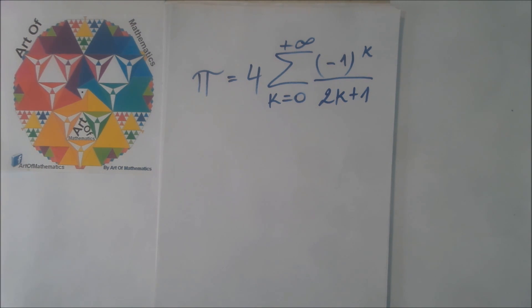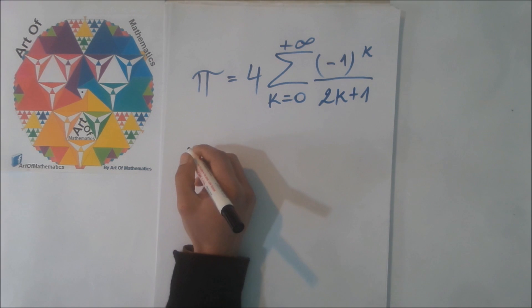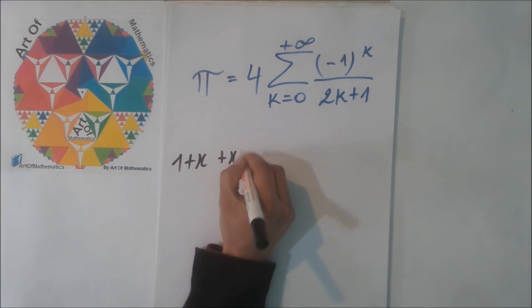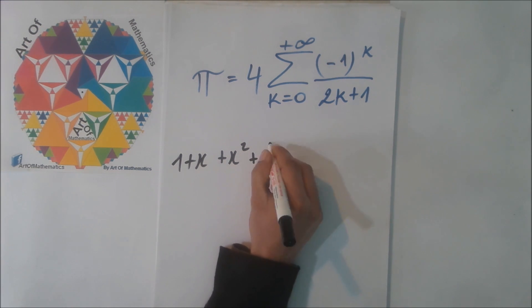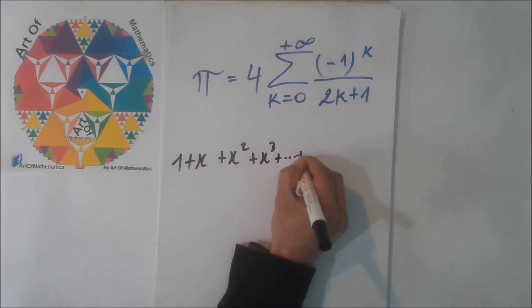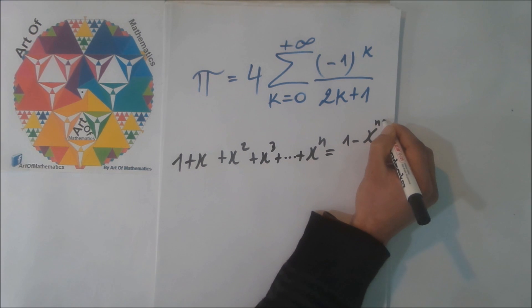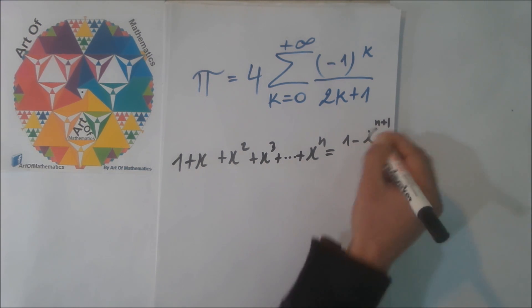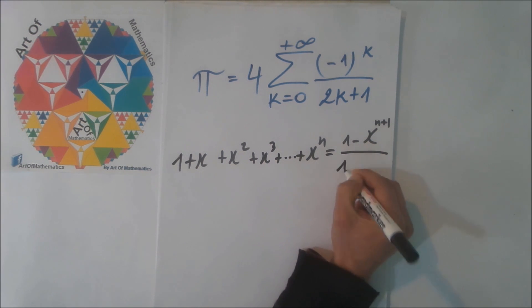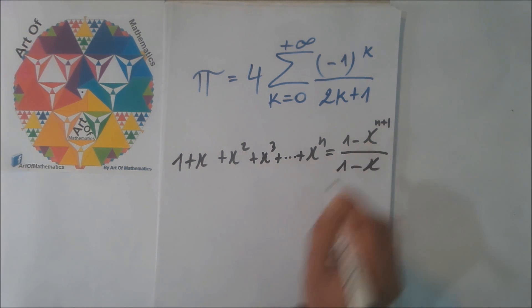Let's start. At first, let's calculate this geometric series, which is 1 plus x plus x squared and so on. We know that this sum is equal to 1 minus x to the power of n plus 1, which is the number of terms of the series, divided by 1 minus x.